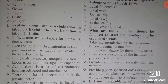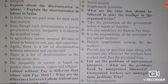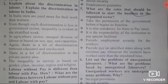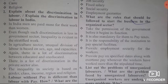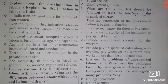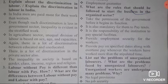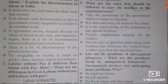Fifth question: What are the rules that should be followed to start a business in the organized sector? In any type of business, first you must take the permission of the government. It is also mandatory — that means compulsory — for them to pay taxes.